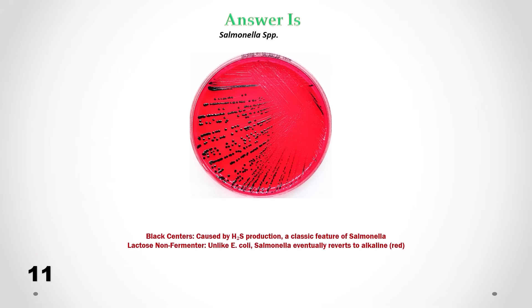Correct answer is Salmonella. We can see black centers caused by H2S production — a classic feature of Salmonella. Also, lactose non-fermenter. Unlike E. coli, Salmonella eventually reverts the medium to alkaline, red.